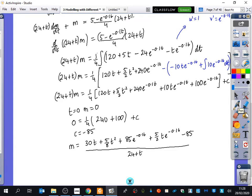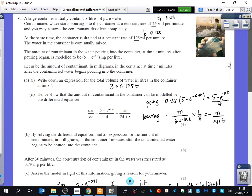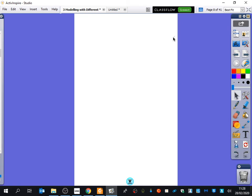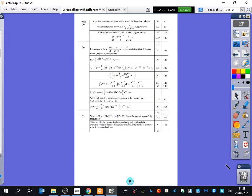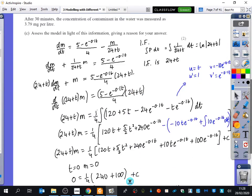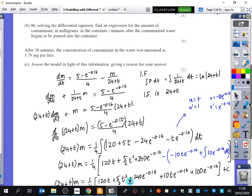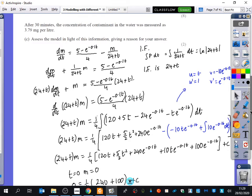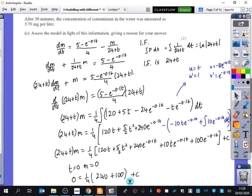And so the value of m is that divided by 24 plus t. And I'm going to check that that's right. Is that correct? So there's no point in me checking it? Okay, I'm going to check it just for my own sanity for a second. Yeah, 1 over 24 plus t, 5 over 8t squared plus 32 plus 85, 5 over 2 minus 85. Okay, great. Now we're going to assess the model. This is the bit where I think some people might have got, this is confusing. It says after 30 minutes, the concentration of contaminant in the water was measured as 3.79 milligrams per litre.